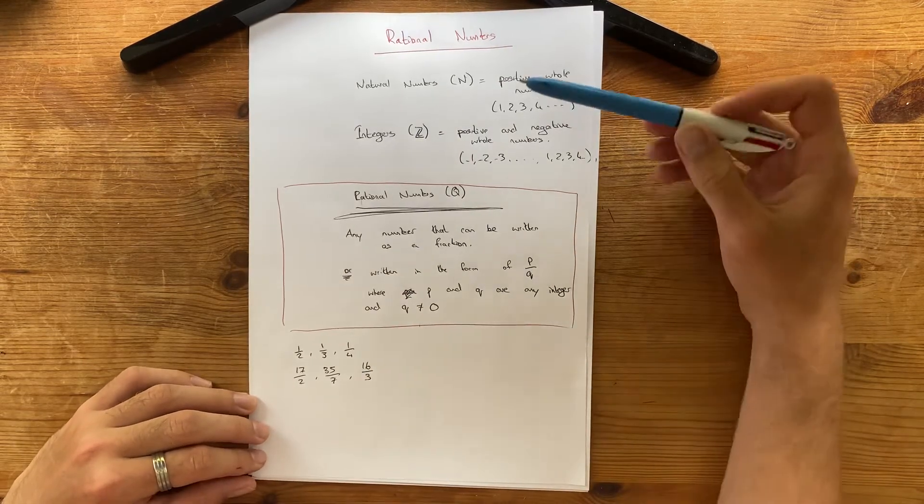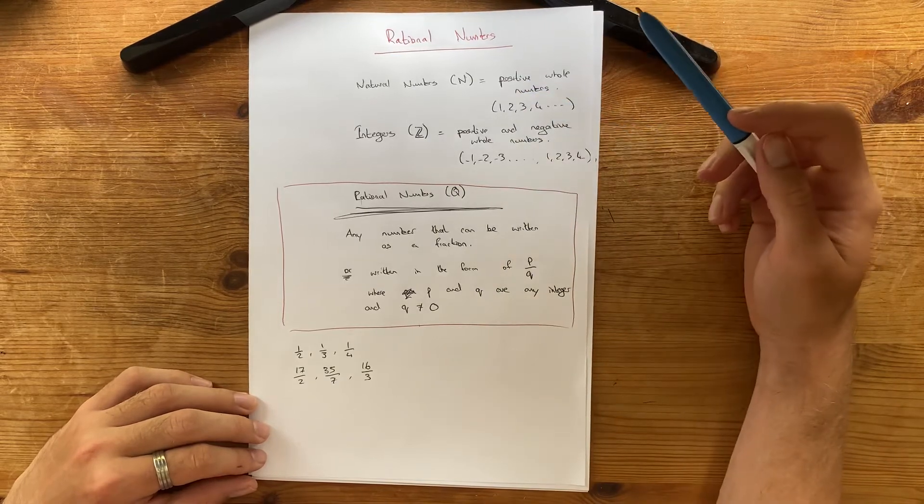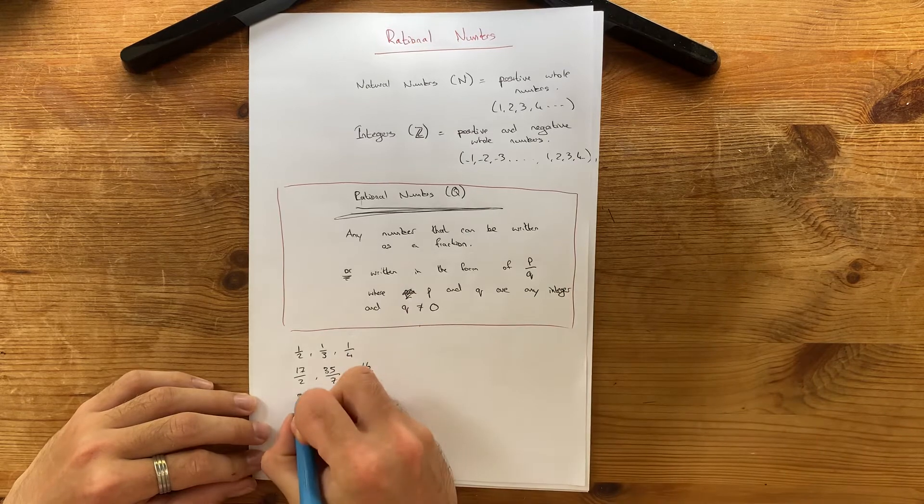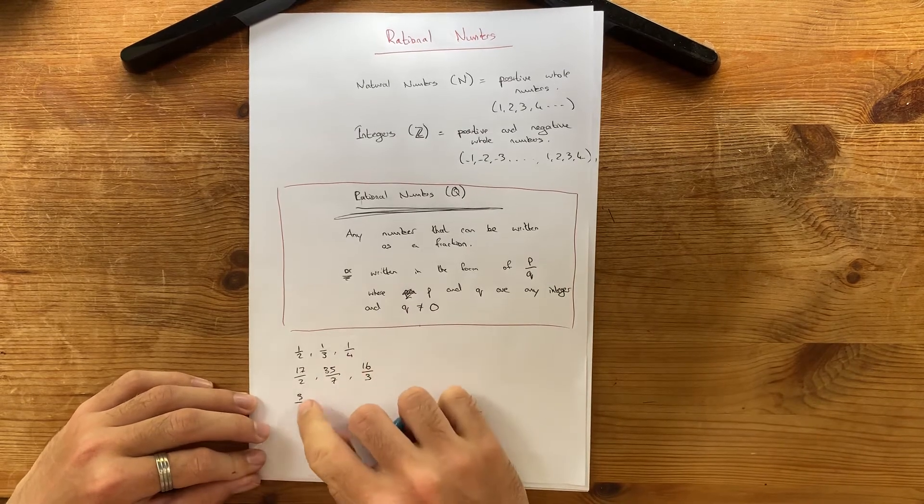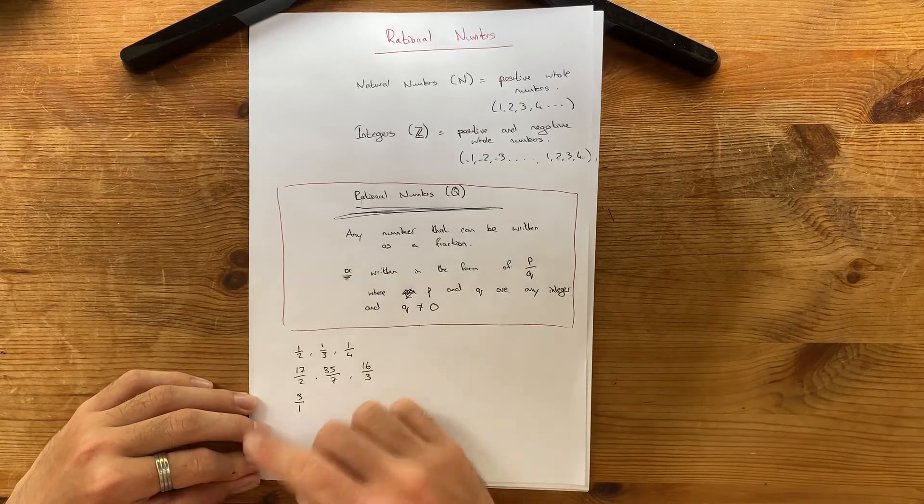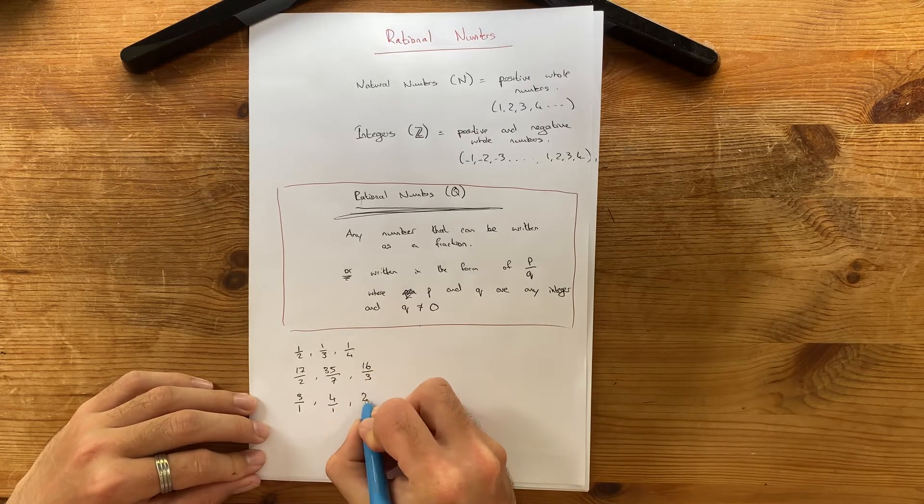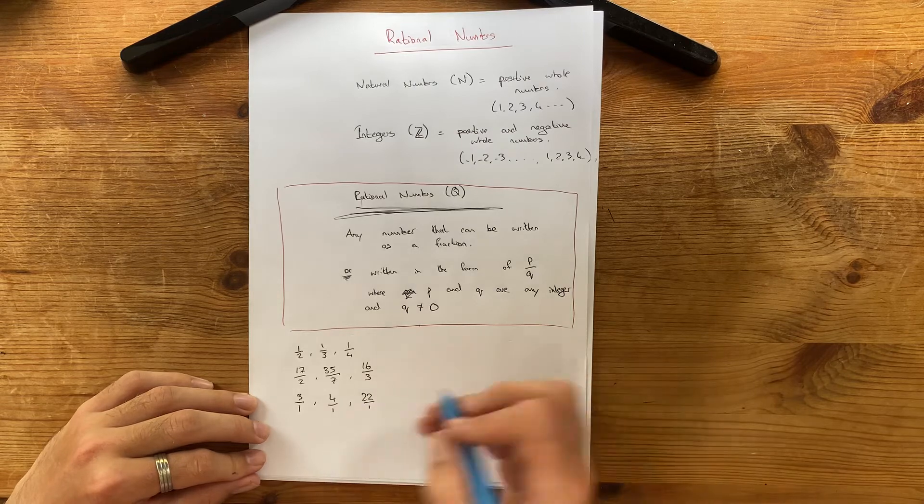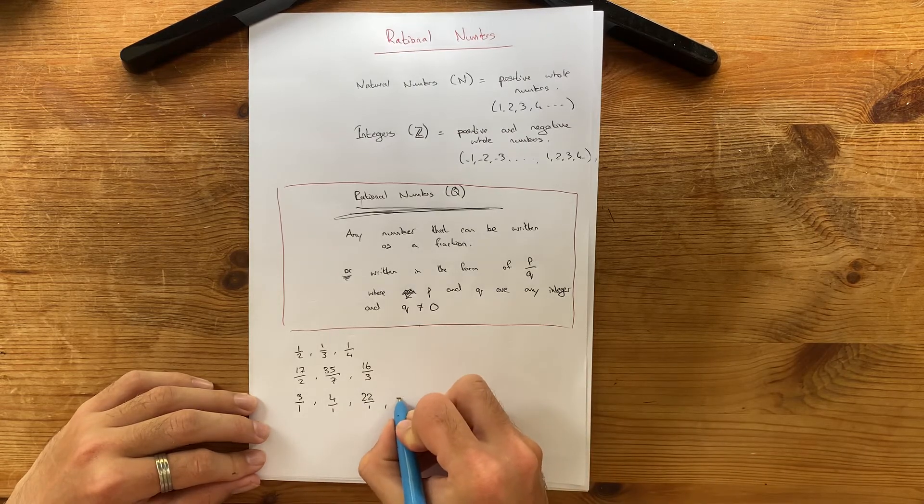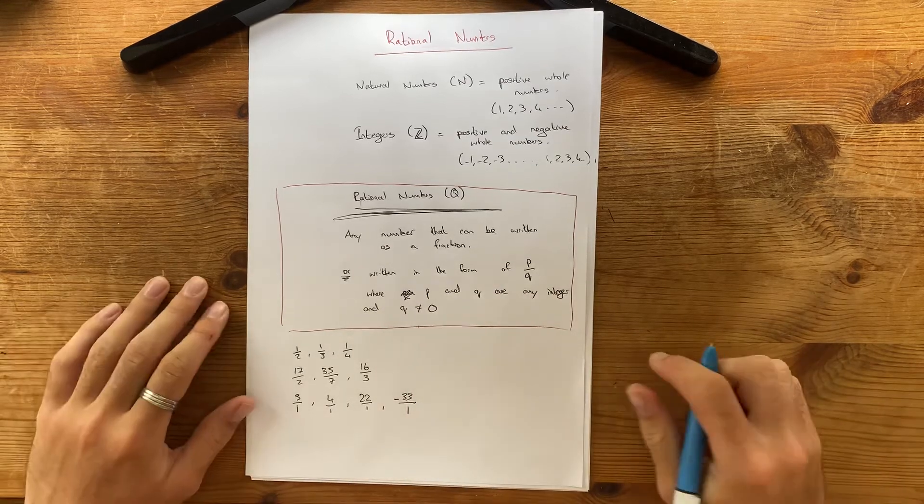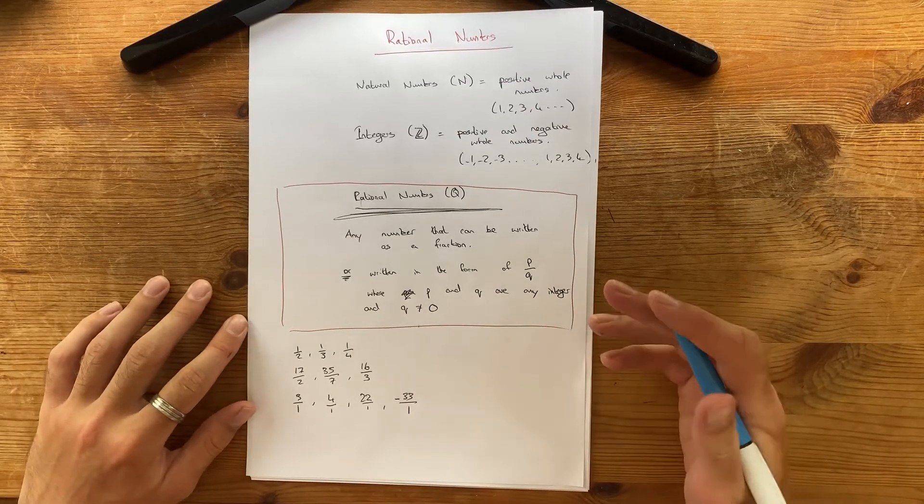Bear in mind that a natural number is also a rational number. So, you can write these natural numbers as fractions. You can have 3 over 1, because 1 into 3 goes 3 times, so it works out. You can have 4 over 1, 22 over 1. You can also have negative ones. You can have minus 33 over 1. And you can go on forever. Any number that can be written as a fraction is a rational number.